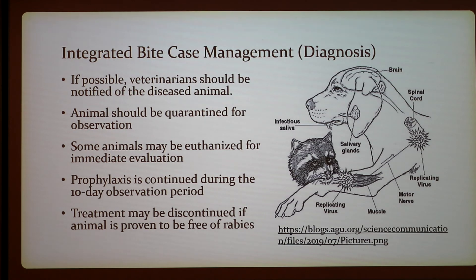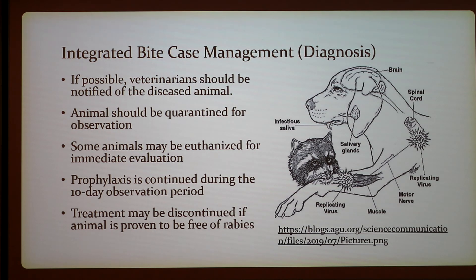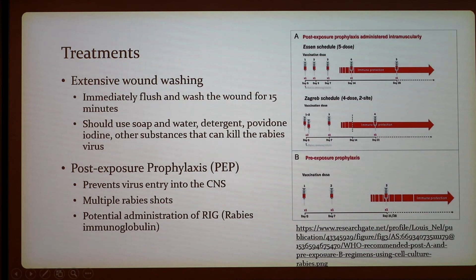Integrated case management involves diagnosis where possible; veterinarians should be notified of the diseased animal, and animals are quarantined for observation. Some animals may be euthanized for brain tissue evaluation — specifically, the brain is examined post-mortem. Prophylaxis is continued during the 10-day observation period, and treatment may be discontinued if the animal is proven free of rabies. This slide shows how the virus travels through the nervous system to the brain.